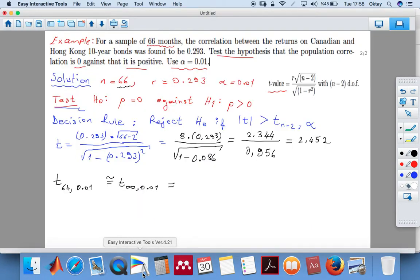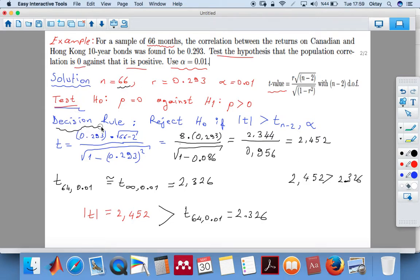So we're arriving at the result. What is the absolute value of our t-value? Since it's already positive, it comes out as 2.452. This value is greater than t 64, 0.01, which is 2.326. Or we can write 2.452 is greater than 2.326. Therefore, our decision rule said reject if this absolute value is greater than the right side. Is it greater? Is 2.4 greater than 2.3? Yes.